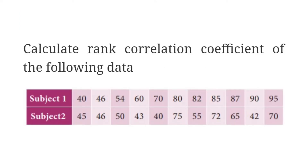In this example, they have given Subject 1 and Subject 2, and the question says find out Spearman's rank correlation. Sometimes they will say 'calculate Spearman's rank correlation,' and sometimes they will say only 'rank correlation.' If they say 'rank correlation,' that is a clue — you have to find it by means of Spearman's rank correlation.